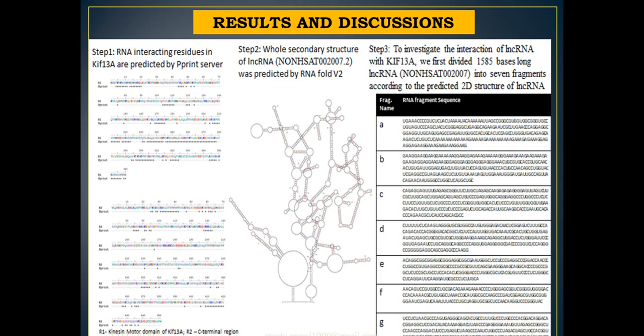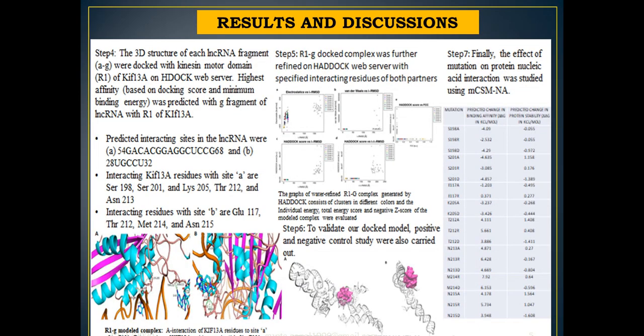This figure shows RNA interacting residues in KIP-13A using the PPRINT server. The second figure shows the secondary structure of LNC RNA as predicted by RNAfold version 2. To investigate the interaction of LNC RNA with KIP-13A protein, we first divided the long non-coding RNA into seven fragments according to the predicted secondary structure. The 3D structure of each LNC RNA fragment was docked with the kinesin motor domain of KIP-13A using the HDOCK web server. The highest affinity was predicted with the G fragment of LNC RNA with the R1 region of KIP-13A. The R1G docked complexes were further refined with the HDOCK server, and positive and negative control studies were carried out.